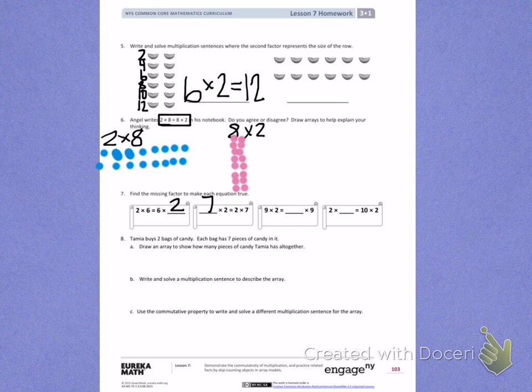Number 8. Tamiya buys 2 bags of candy. Each bag has 7 pieces of candy in it. Draw an array to show how many pieces of candy Tamiya has altogether.